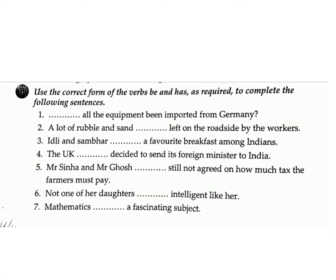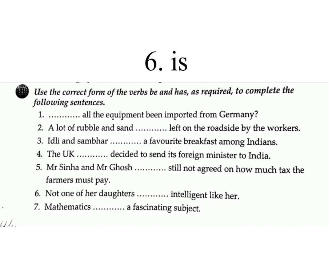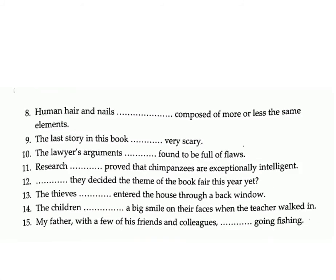Question 5: Mr. Sina and Mr. Gush ___ still not agreed on how much tax the farmers must pay. Answer: have. Question 6: Not one of her daughters ___ intelligent like her. Answer: is. Question 7: Mathematics ___ a fascinating subject. Answer: is. Question 8: Human hair and nails ___ composed of more or less the same elements. Answer: are. Question 9: The last story in this book ___ very scary. Answer: is. Question 10: The lawyer's arguments ___ found to be full of flaws. Answer: were.